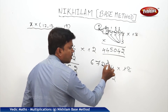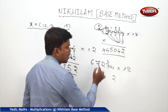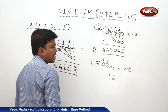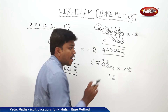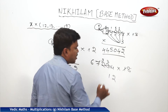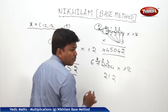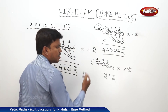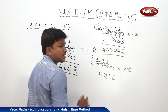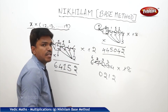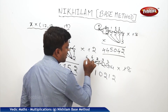Drop 1, carry 3. Next: 8 times 2 is 16, plus carry 3 is 19. Add right side digit 3: 19 plus 3 is 22 — drop 2, carry 2. Next: 8 times 7 is 56, plus carry 2 is 58. Add right side digit 2: 58 plus 2 is 60 — drop 0, carry 6. Next: 8 times 6 is 48, plus carry 6 is 54. Add right side digit 7: 54 plus 7 is 61 — drop 1, carry 6.